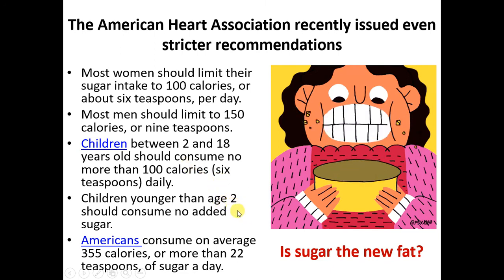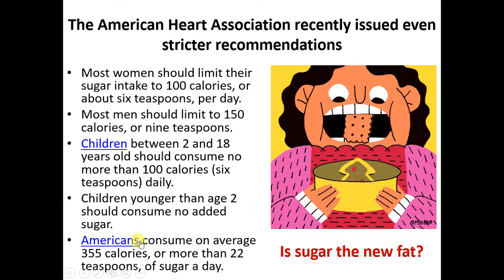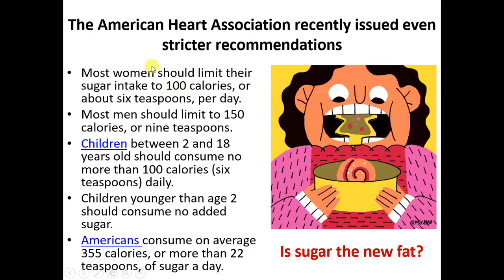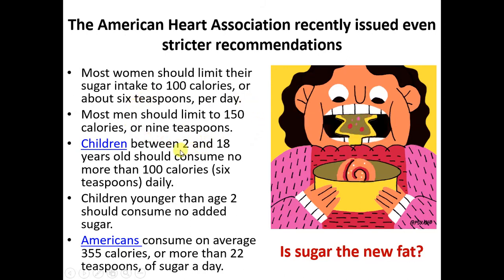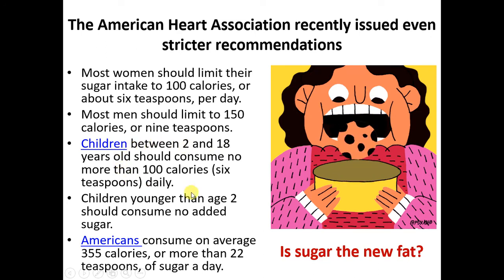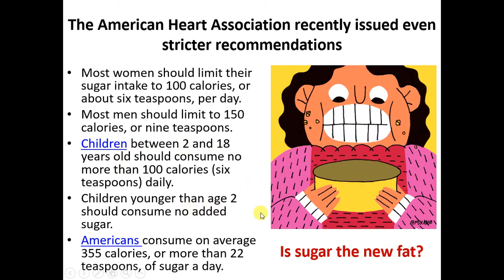Know these limits: for women, it's 6 teaspoons, about 100 calories; for men, 9 teaspoons, 150 calories; for children 2 to 18, same as women; under 2, no added sugar. This is far below what we're actually eating. A lot of our sugars come from beverages. To convert grams of sugar to teaspoons, divide by 4.